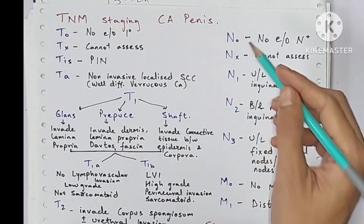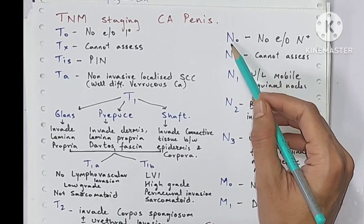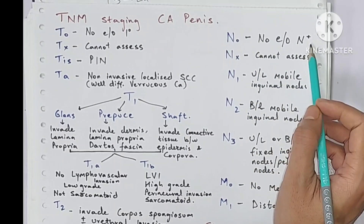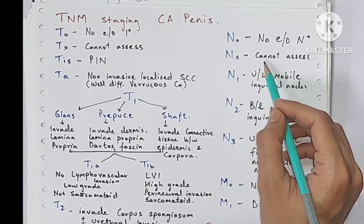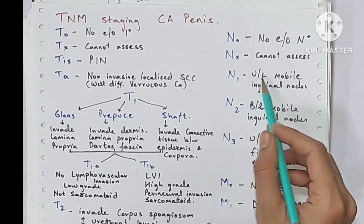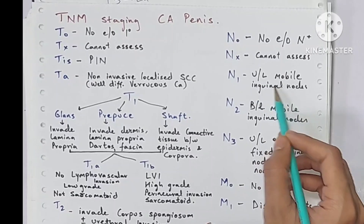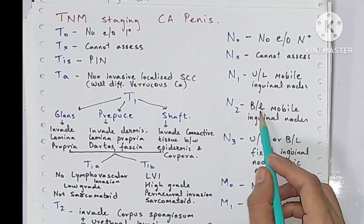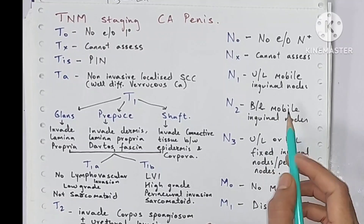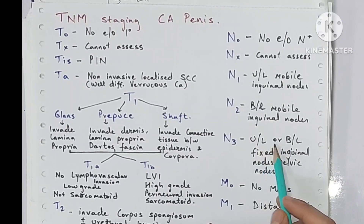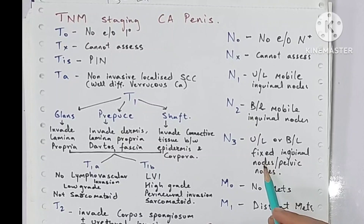For nodal involvement: N0 is when there is no evidence of nodal involvement; Nx when nodal involvement cannot be assessed. N1 is when there is unilateral mobile inguinal lymph nodes. N2 is when there are bilateral mobile inguinal lymph nodes. N3 is when there is unilateral or bilateral fixed inguinal lymph node, or pelvic lymph node involvement.